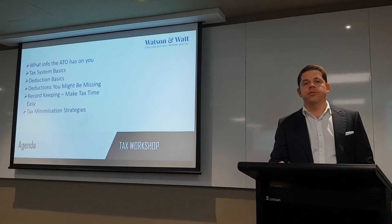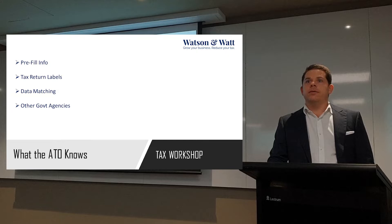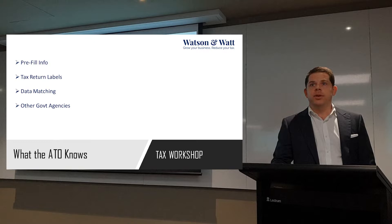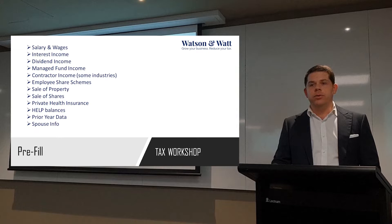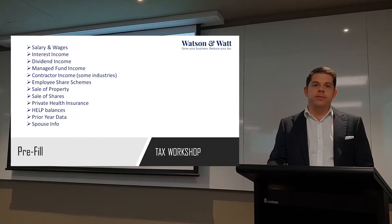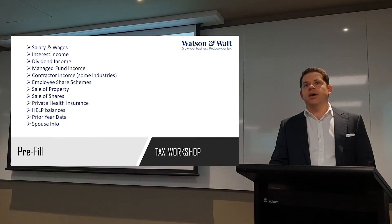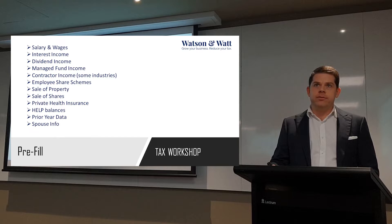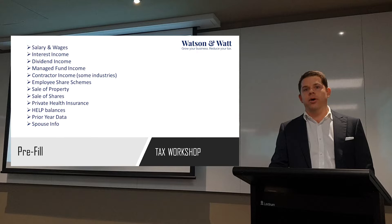Tinfoil hats on - here we go. What the ATO knows about you is broadly lumped into four categories: pre-fill information, tax return labels, data matching, and other government agencies. Pre-fill is basically when you look into your MyTax and do it online - there'll be a whole bunch of information already there. Your employer will have uploaded your payment summaries, the bank will give you the interest information. As tax agents we get the same data in a slightly different format, but it broadly covers all income categories: salary and wages, interest, dividends, managed funds, and contractor income - that's only for some industries with higher levels of cash transactions.